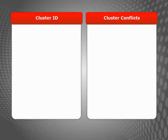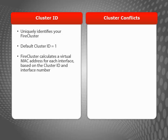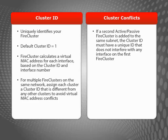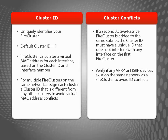When you configure a FireCluster, you need to assign a cluster ID number to identify it. The default ID number is 1. If you use certain third-party routers in your network that rely on VRRP to get their network IDs, it is possible that the ID they receive can conflict with your FireCluster ID. I recommend reviewing the FireCluster help for more information.